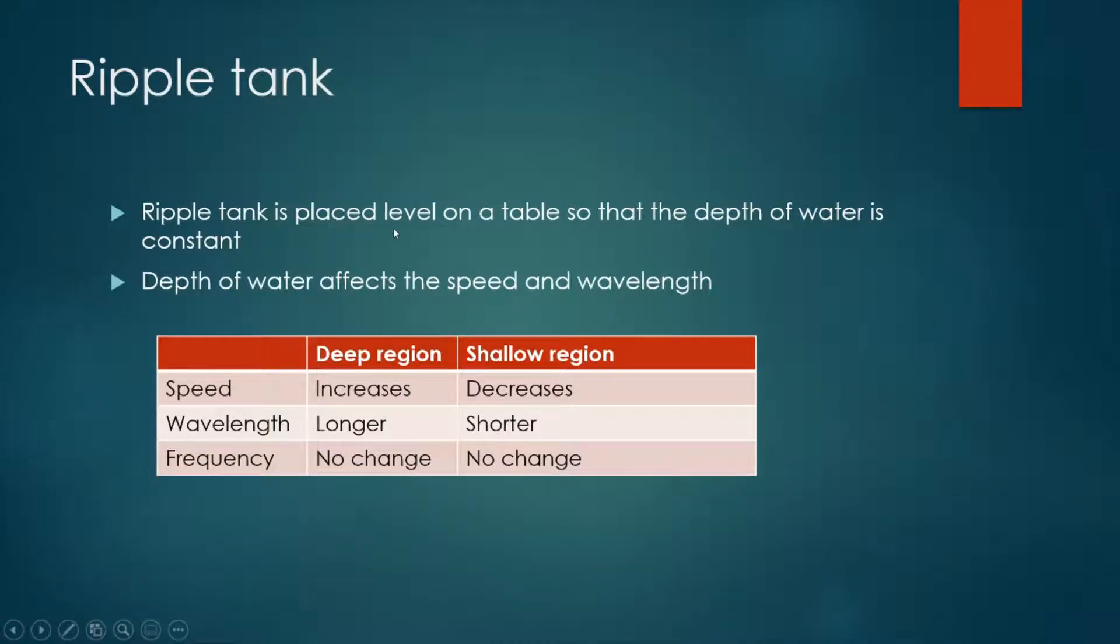The ripple tank must be placed level on the table so that the depth of water is constant, because depth of water will affect the speed of water wave and also the wavelength.